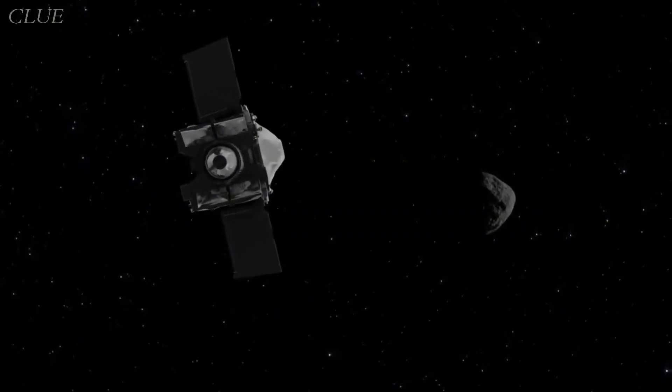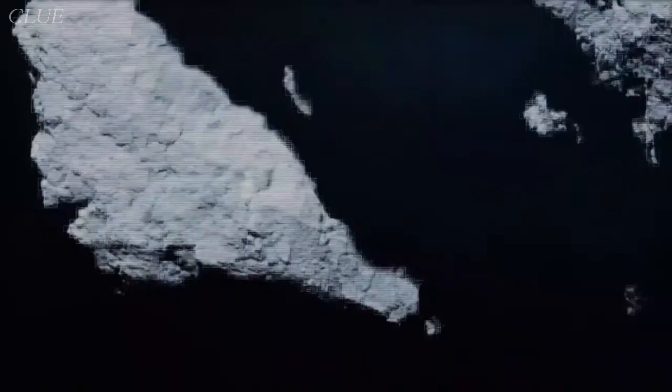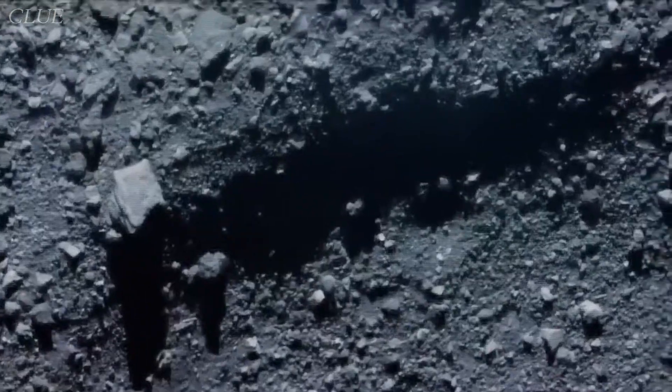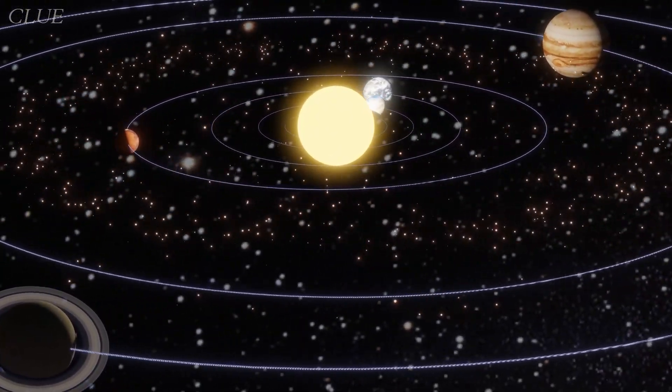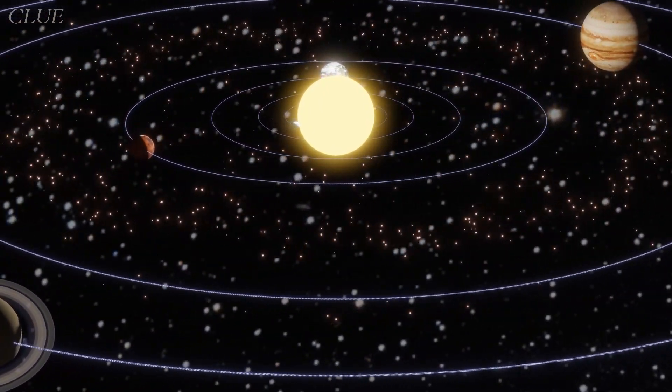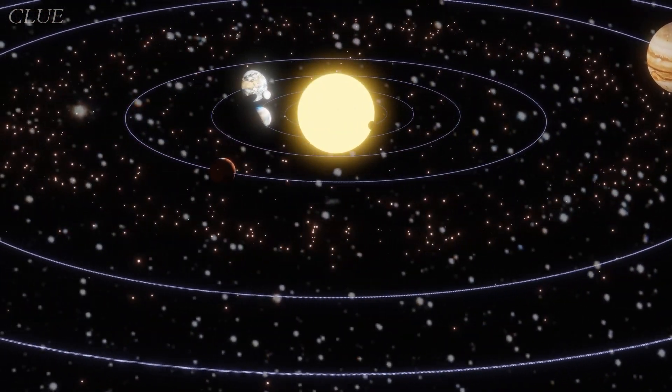The primary goal of the OSIRIS-REx mission was to study the near-Earth asteroid Bennu and collect a sample from its surface. The objectives about getting samples retrieved from the asteroid is to get an idea about the origins of the solar system, how planets came to what they are today, and about organic compounds that led to life in our home planet.